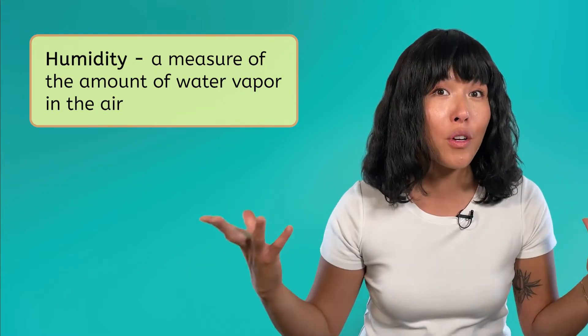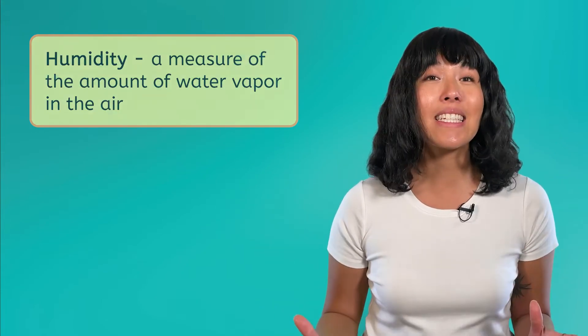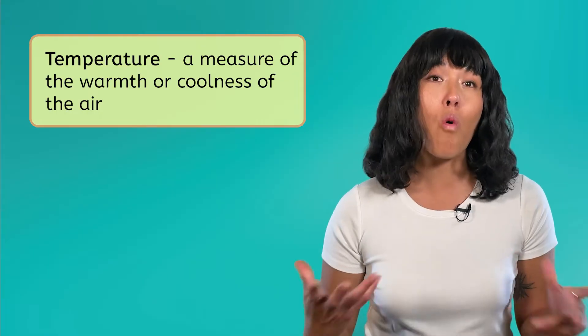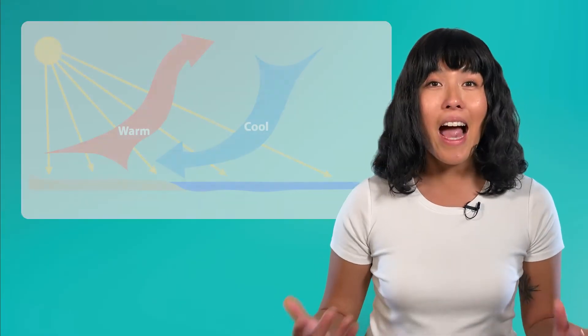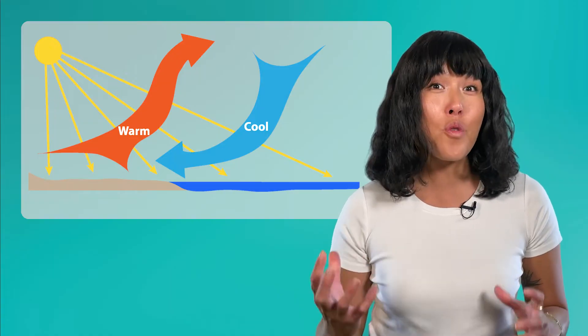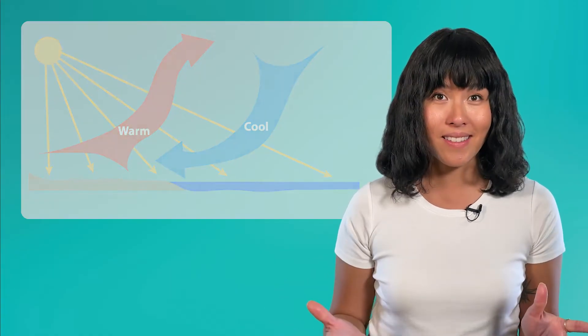Let's start with humidity — a measure of the amount of water vapor in the air. Humidity is connected to temperature, which is a measure of the warmth or coolness of the air, because warm air can hold more water vapor than cool air. As we learned previously, warmer air rises and cooler air sinks, causing air to move around and create wind. This wind can influence weather patterns by carrying warm and cool air from one place to another — for example, moving warm, humid air that can cause rain clouds to form.